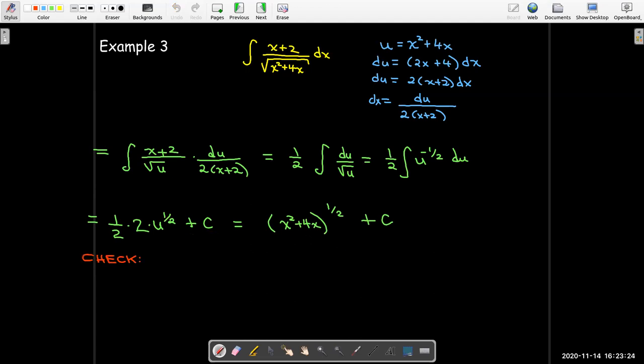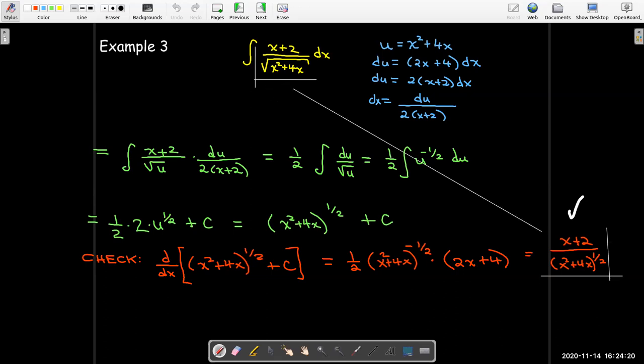Now we can check this answer. We can check any antiderivative. If we take the derivative of the antiderivative, we should get something equivalent to the original integrand. So if I take the derivative here, the derivative of the constant is 0. I'll need to use the power rule and then the chain rule. So 1 half comes out in front. I have the negative. 1 half is my new exponent. The derivative of the inside is 2x plus 4. And from the work that we already did, we know if I take 2x plus 4 and multiply it by 1 half, that will just be x plus 2. So that winds up being a writing it as a fraction x plus 2 over quantity x squared plus 4x to the 1 half power. And of course, to the 1 half power is the same as the radical. So good. That checks out.